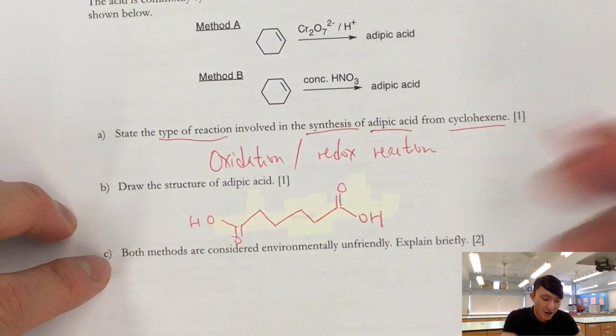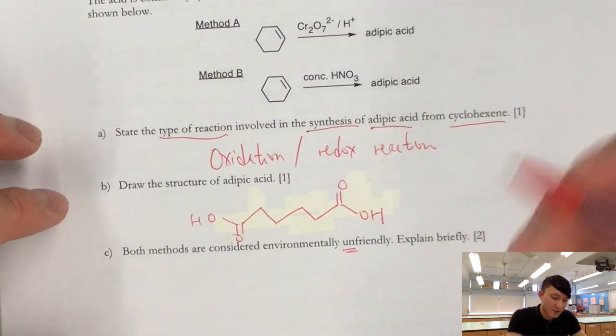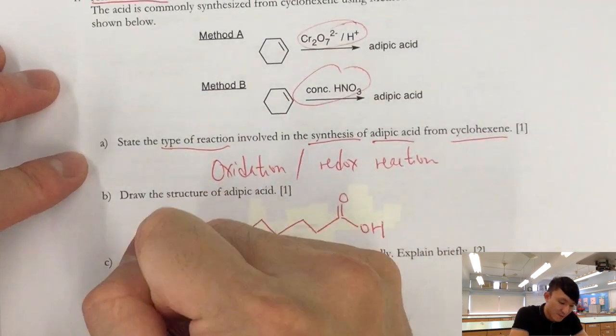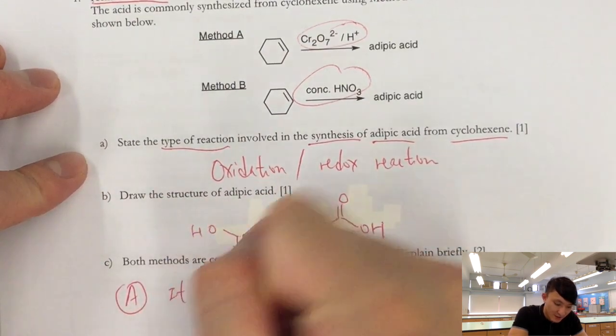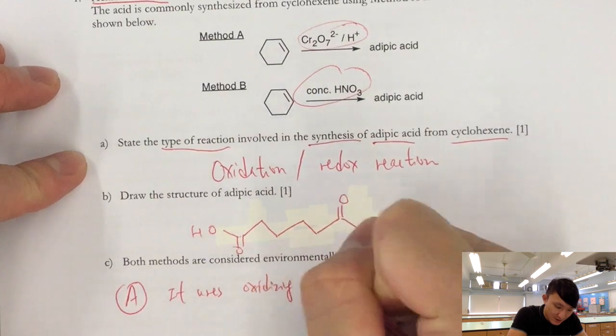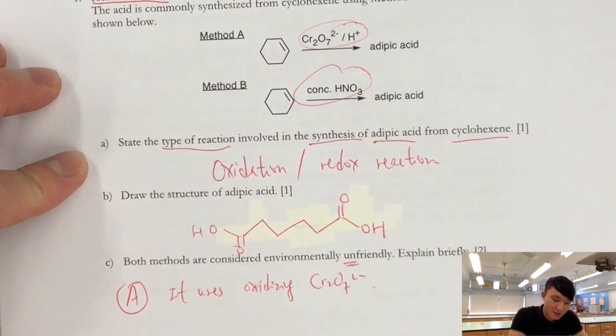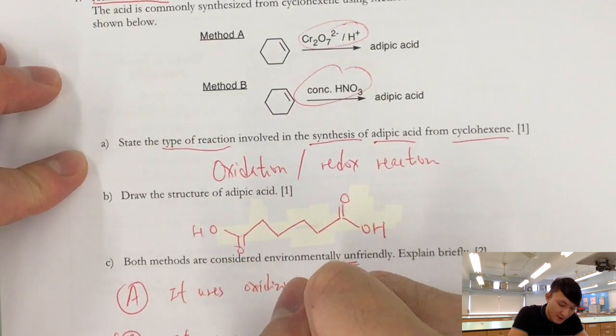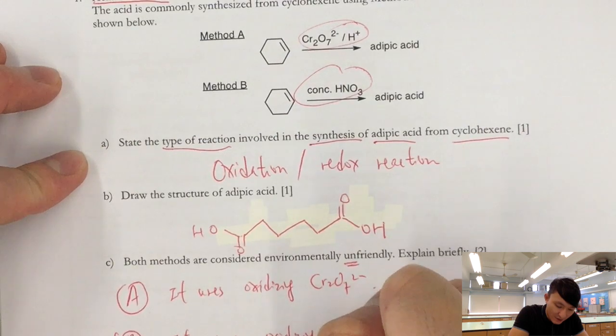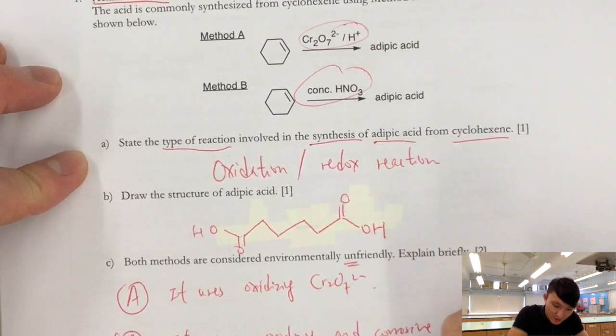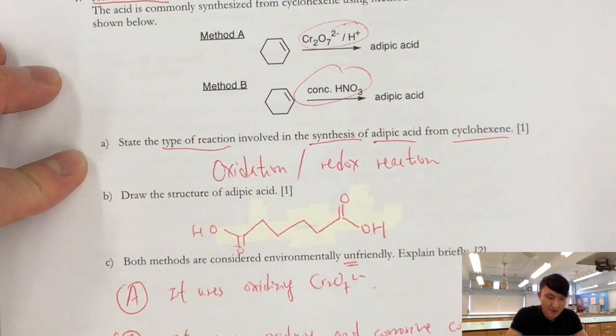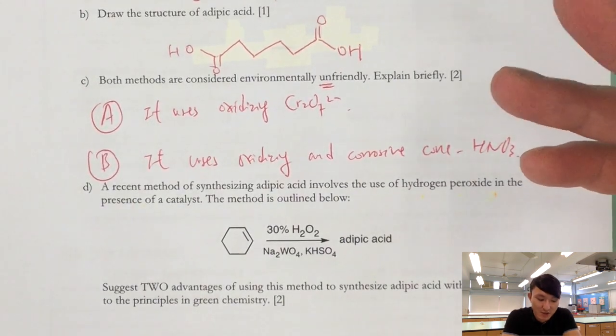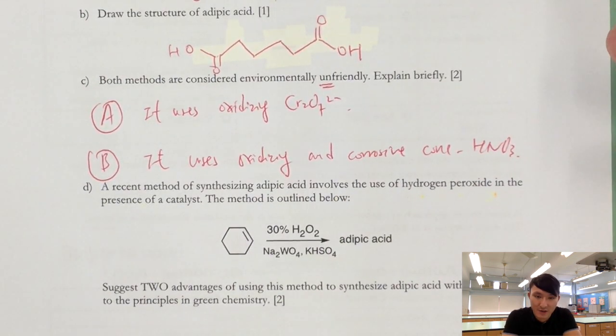Now, both methods are considered as environmentally unfriendly. I'll explain briefly. So, of course, it has to do with the reagent that it uses. For method A, it uses oxidizing Cr2O7 2-. And B, it uses oxidizing and corrosive conc HNO3. So basically, using hazardous chemicals is always unfriendly to the environment.